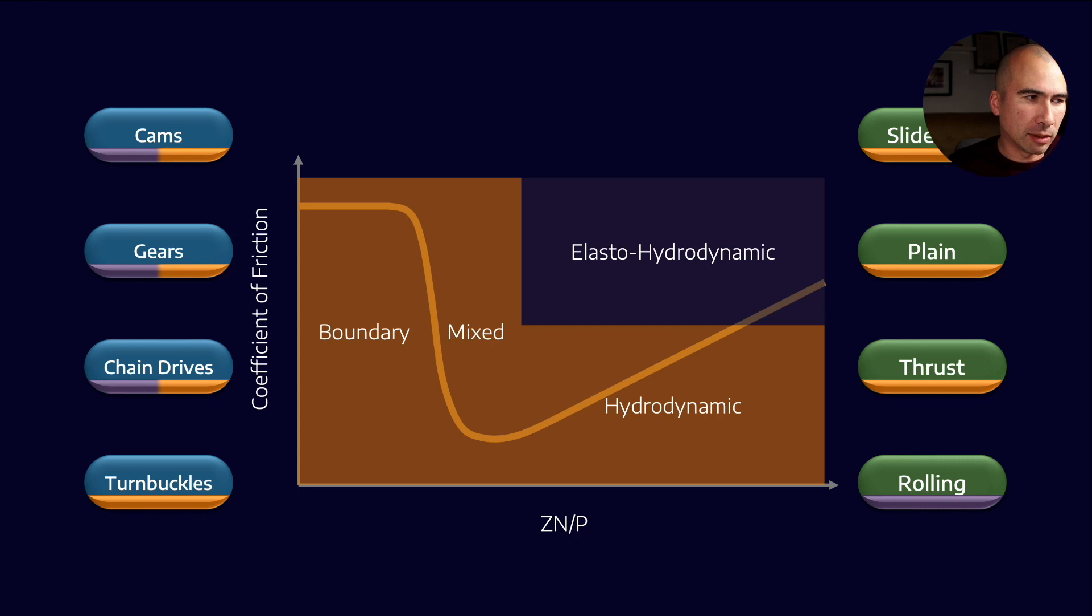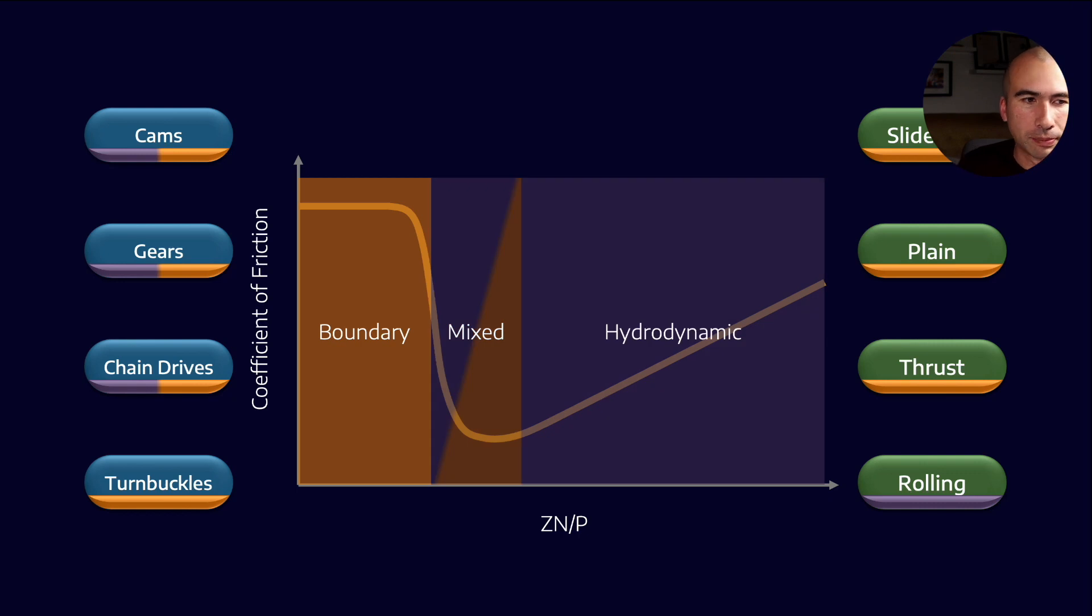Basically, what I'm saying is that purple is kind of more of a rolling versus orange being more of a sliding sort of motion. Now, let's think about compressors. We can eliminate a few of these mechanical devices, because we don't really have too many chain drives or turnbuckles. So we can start to get rid of some of these.